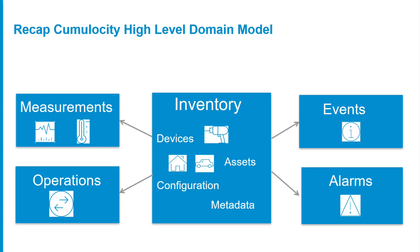The inventory stores all master-related data for your device — it stores the configuration and the connection. In addition, the inventory stores all the related assets, be these buildings, cars, or machines. The measurement contains numerical data produced by the sensors, like temperature readings or calculated data based on information from the devices.